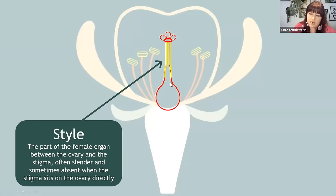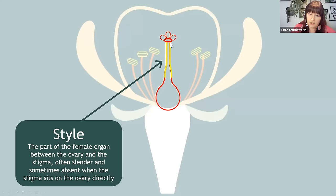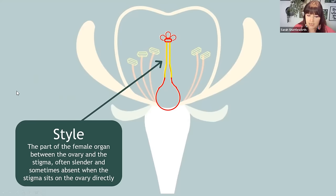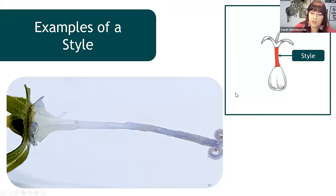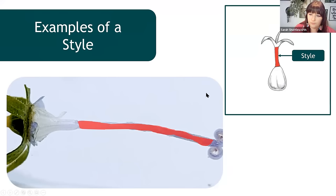The stigma usually sits on a stalk-like structure above the top of the ovary called the style. It's not always present — sometimes the stigma comes directly from the top of the ovary — but quite often there is some form of style. It acts as mechanical support, contains pathways for pollen to travel down for fertilisation, and elevates the stigma so it's prominent for when pollen arrives on the legs of a bee or similar.